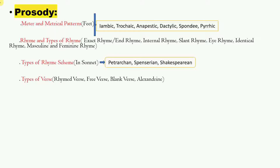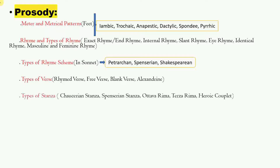Next are types of verse. Once you understand metrical patterns like iambic and trochaic, you can understand types of verse. A verse in iambic pentameter with end rhyme is a heroic couplet. Free verse has no rhyme and may be in iambic pentameter — a poem in free verse may contain rhythm but not rhyme. Blank verse and Alexandrine are also important. These first three types are most common.